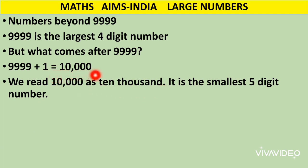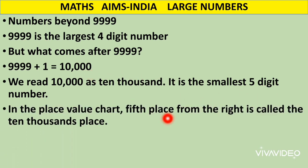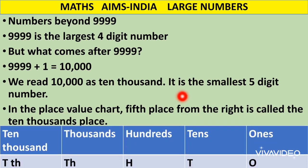This number 10,000 is the smallest five digit number — five digit numbers start from 10,000. In the place value chart, the fifth place from the right is called the ten thousands place.